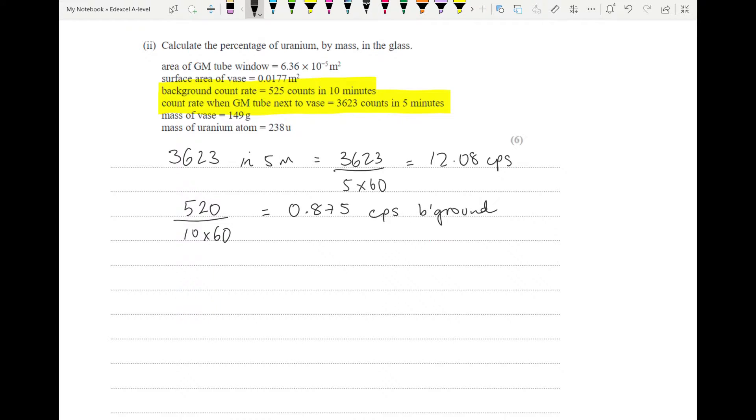We should know that if we want to find the count rate from the vase, then we have to take the background away from any count that we have, making sure, of course, like we just did, that they're in the same unit. So we're going to subtract these two. We get 11.2 counts per second from the little window of our GM tube.